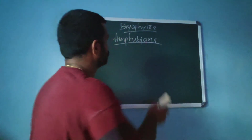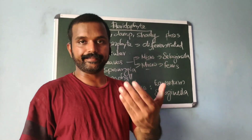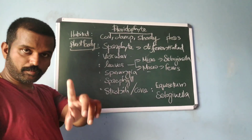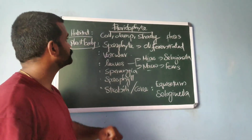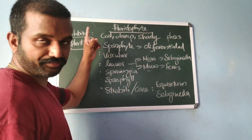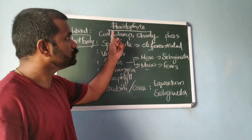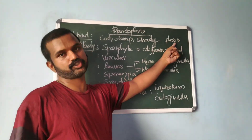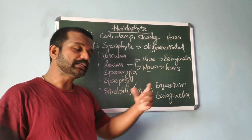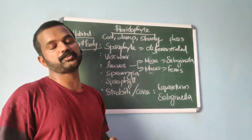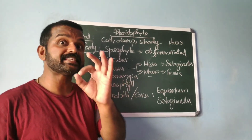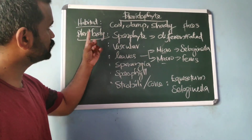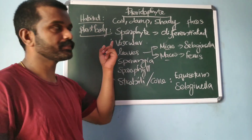Now about pteridophytes in detail. Their habitat: pteridophytes are usually found in cool, damp and shady places, though some pteridophytes may flourish well in sandy soil conditions. Next, about the plant body.